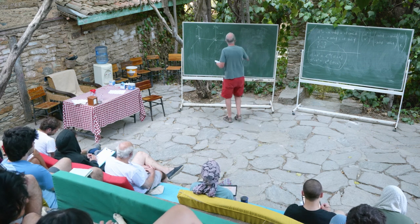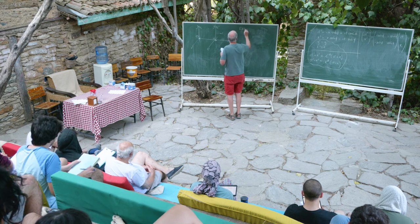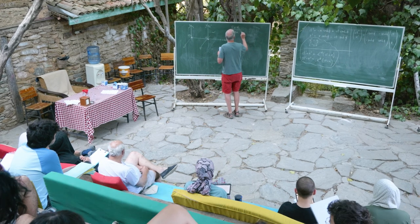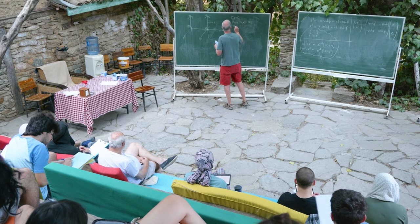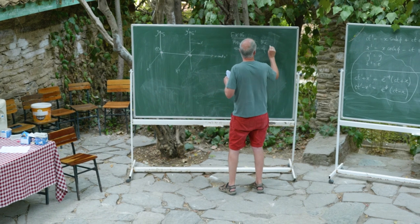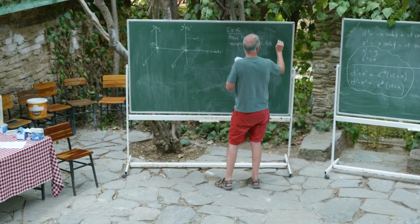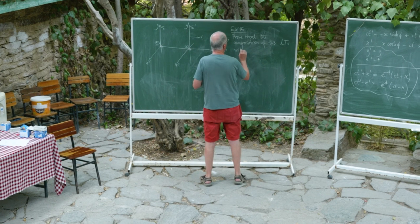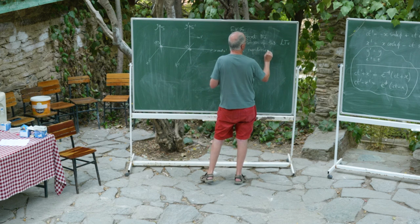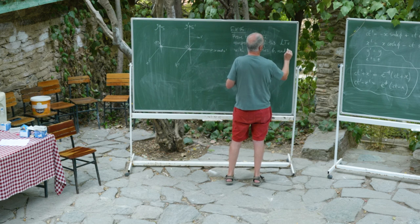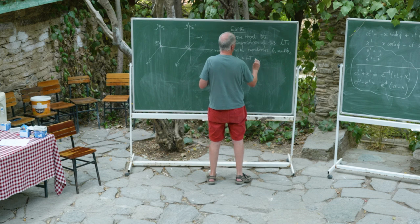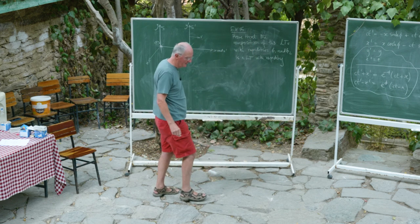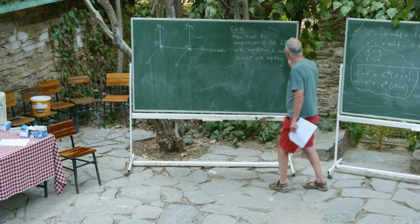Okay, Exercise 15: we're going to prove that the composition of two standard Lorentz transforms with rapidities φ₁ and φ₂ is a Lorentz transform with rapidity... well, let's find out. If you have my lecture notes you'll know the answer.